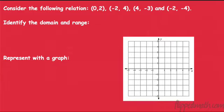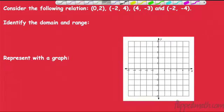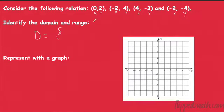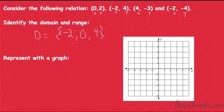Let's try one here. Consider the following relation — remember, a relation just means there's an input and then there's an output. Identify the domain and range. When you're given distinct sets of points, we like to use these fancy brackets. So for the domain, what are all my values of x? I like to write them in order. My smallest x is negative 2. I have it twice, but I'm not going to write it twice. Then 0, and last but not least, 4. So my domain would be negative 2, 0, and 4.